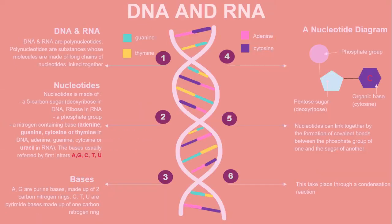Let's look into DNA and RNA. DNA and RNA are polynucleotides. Polynucleotides are substances whose molecules are made of long chains of nucleotides that link together.